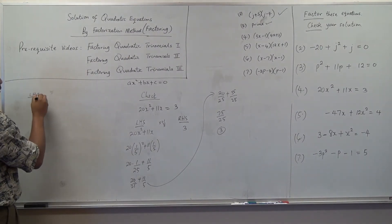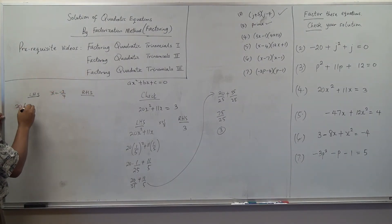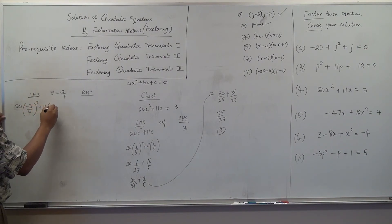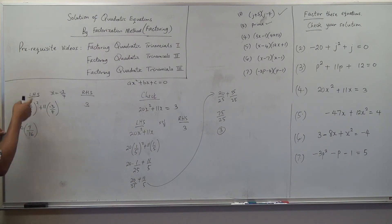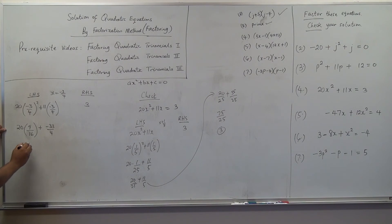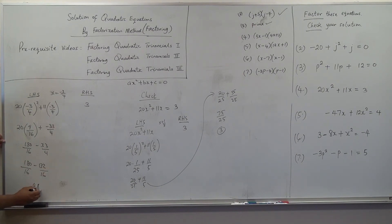Now check for x equal to negative 3 over 4. Left-hand side: 20 times negative 3 over 4 all squared plus 11 times negative 3 over 4. That is 20 times 9 over 16, because negative times negative is positive, then plus negative 33 over 4. This is 180 over 16 minus 132 over 16, giving 48 over 16, which equals 3. Left side equals right side — confirmed. If you are confused with this, you need to go and learn fractions — I did some videos on fractions as well.